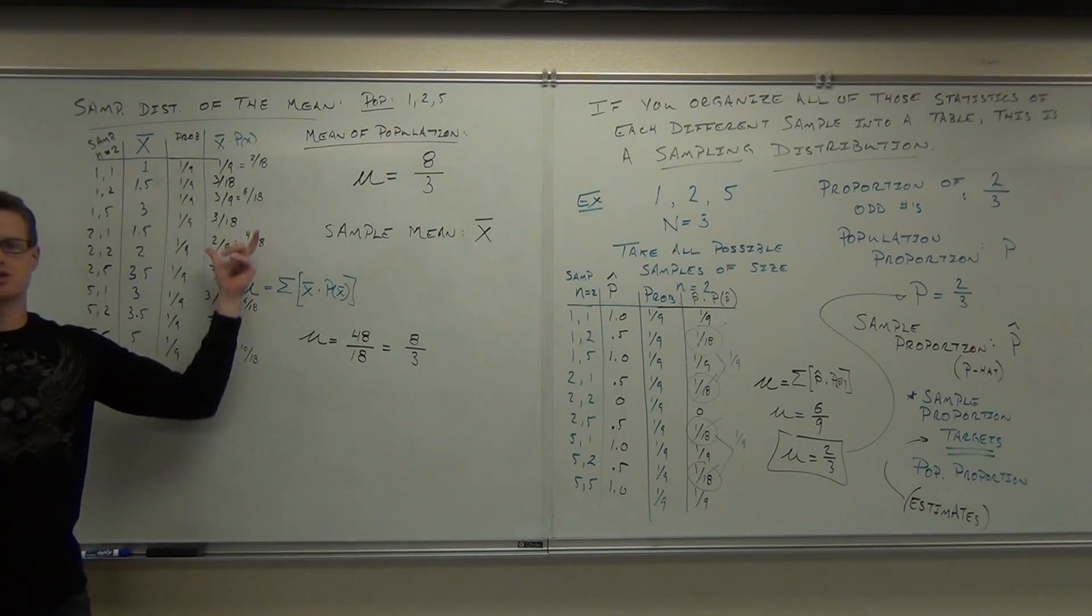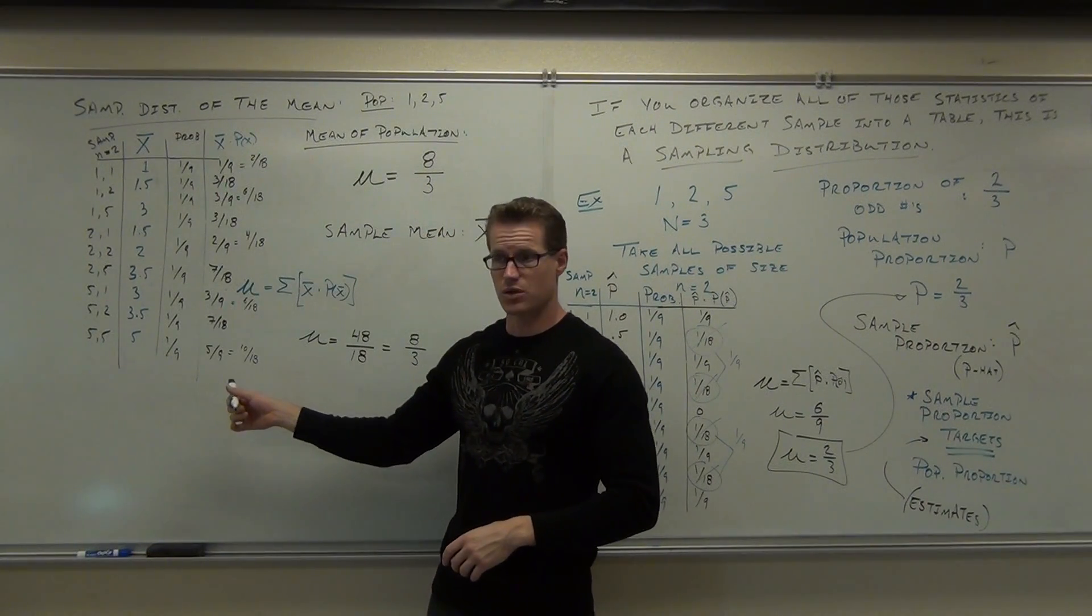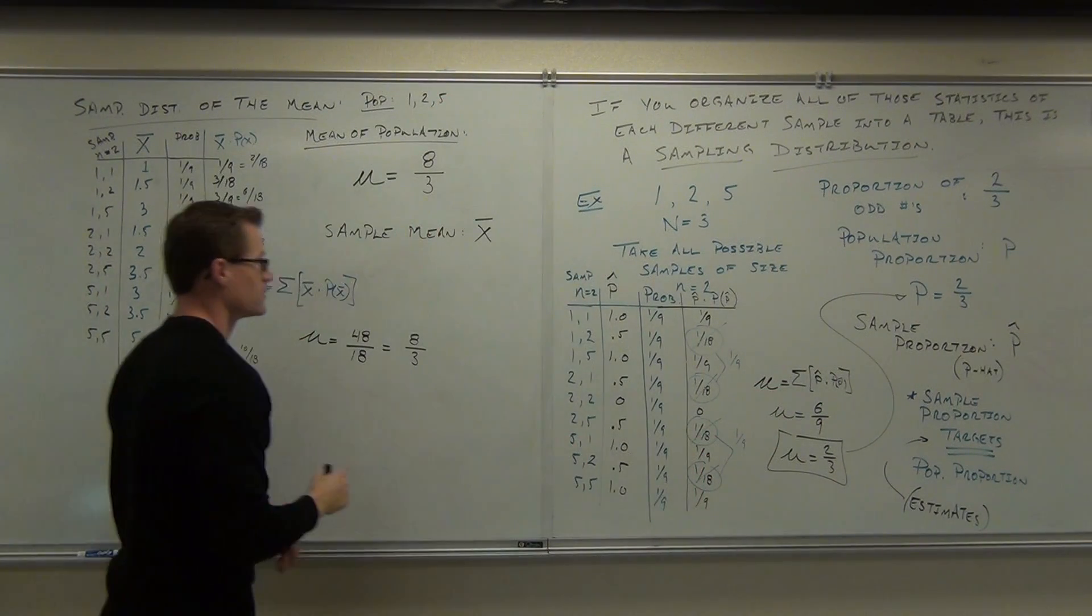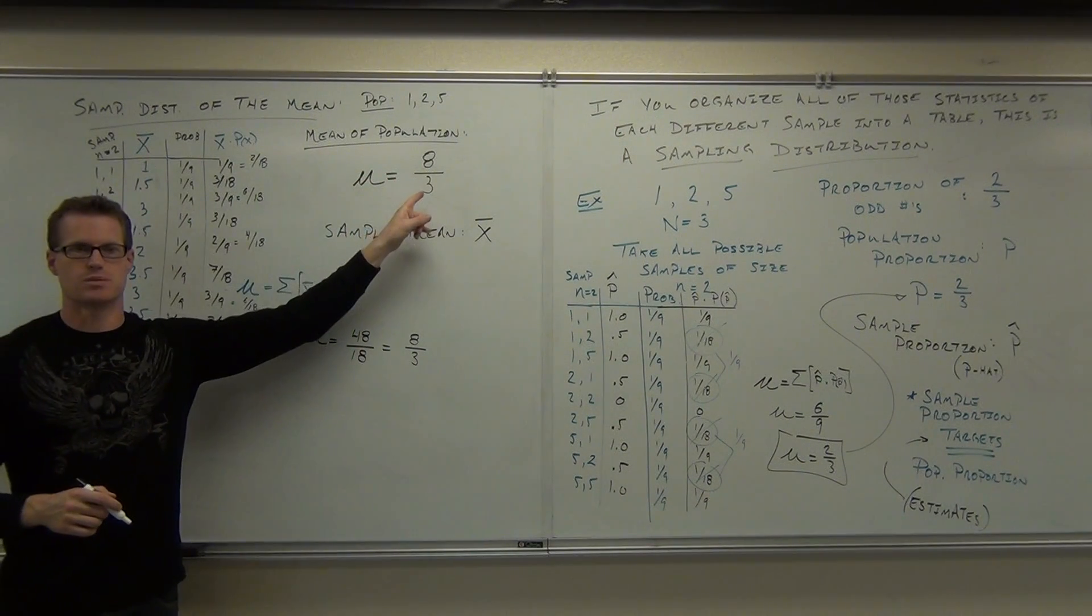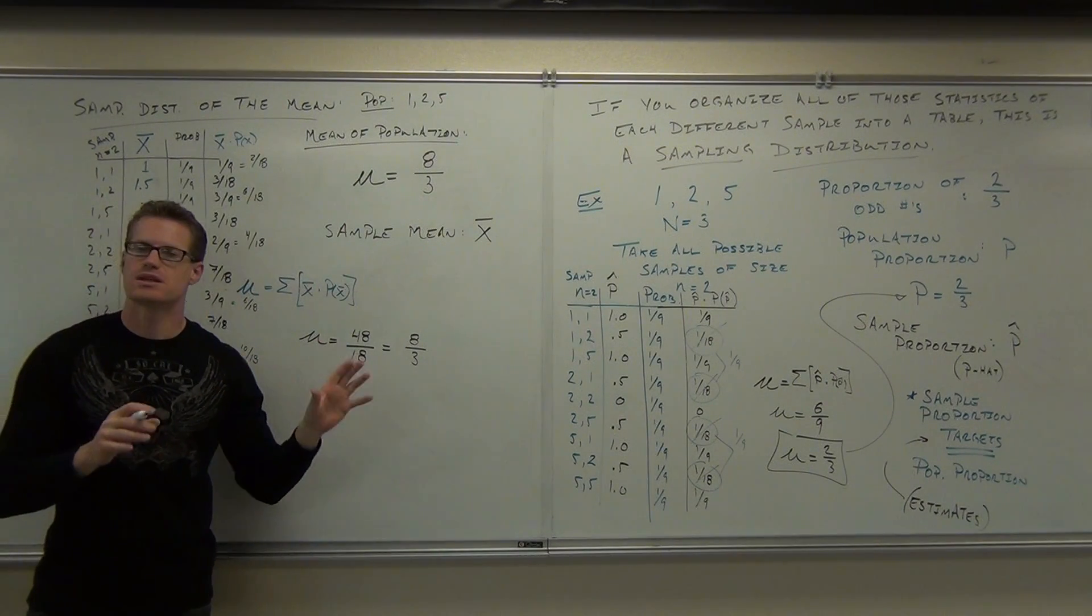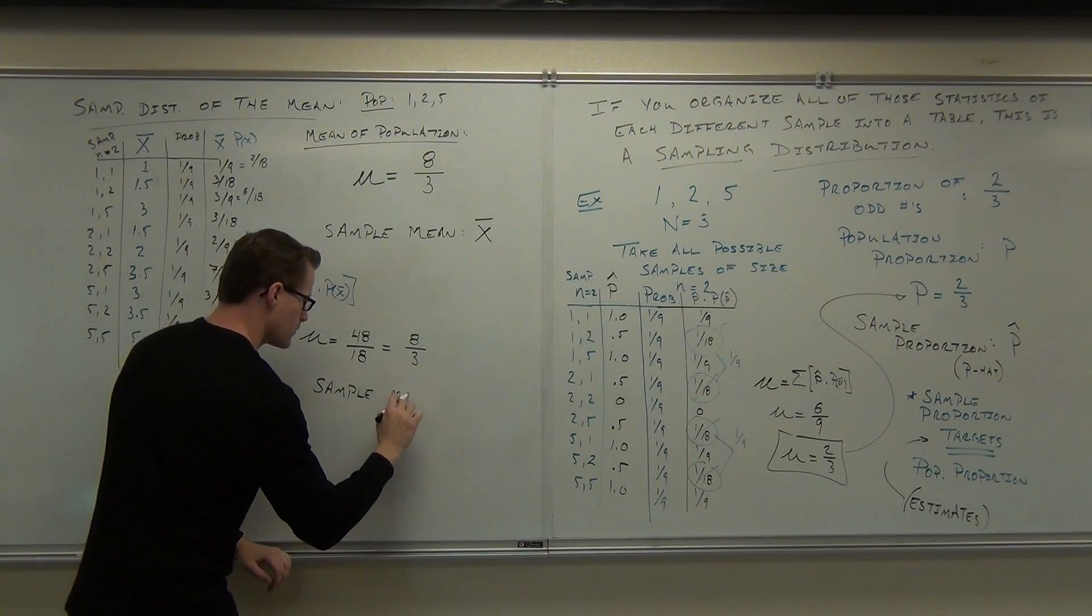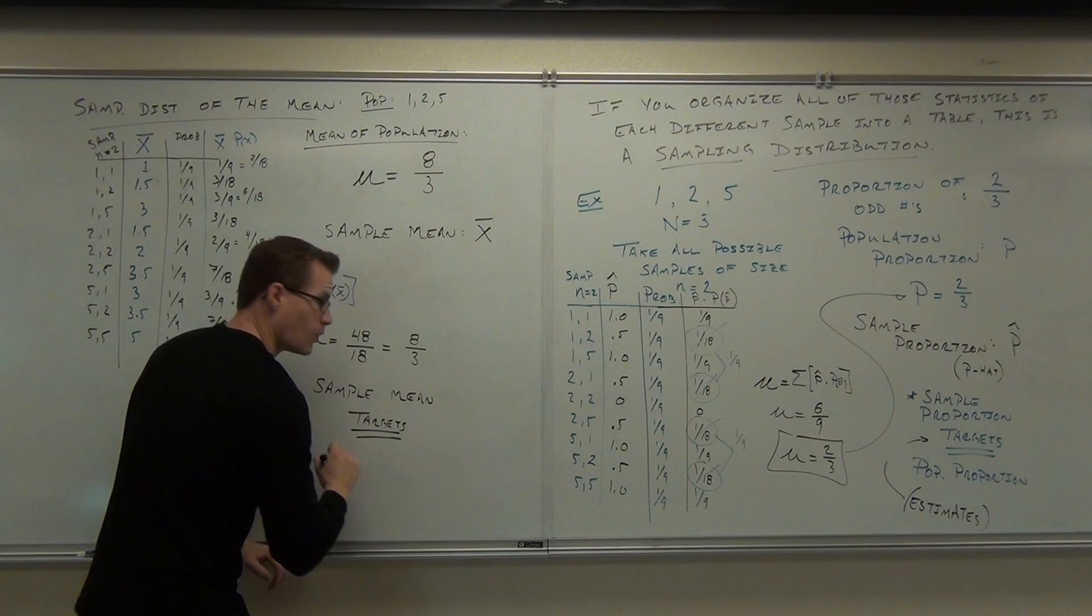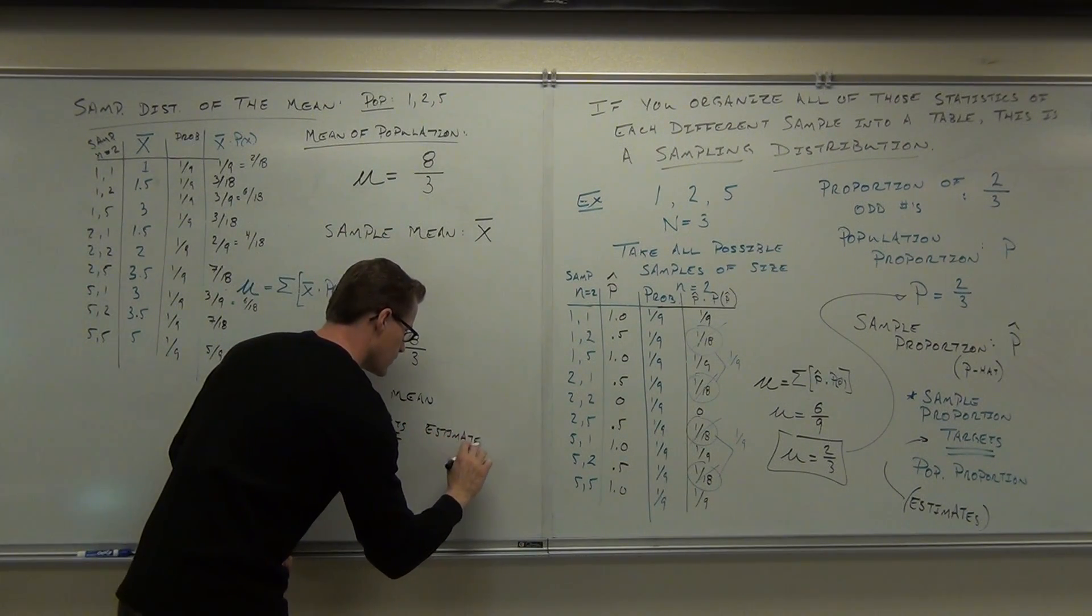Can you reduce forty-eight over eighteen? What goes into both numbers? Six. This gives you eight over three. If you add up this column of numbers, you're going to get eight-thirds, or two point six six six six forever. So what happened? Were each of these sample means the same as our population mean? No. But when I average them, it's exactly the same.